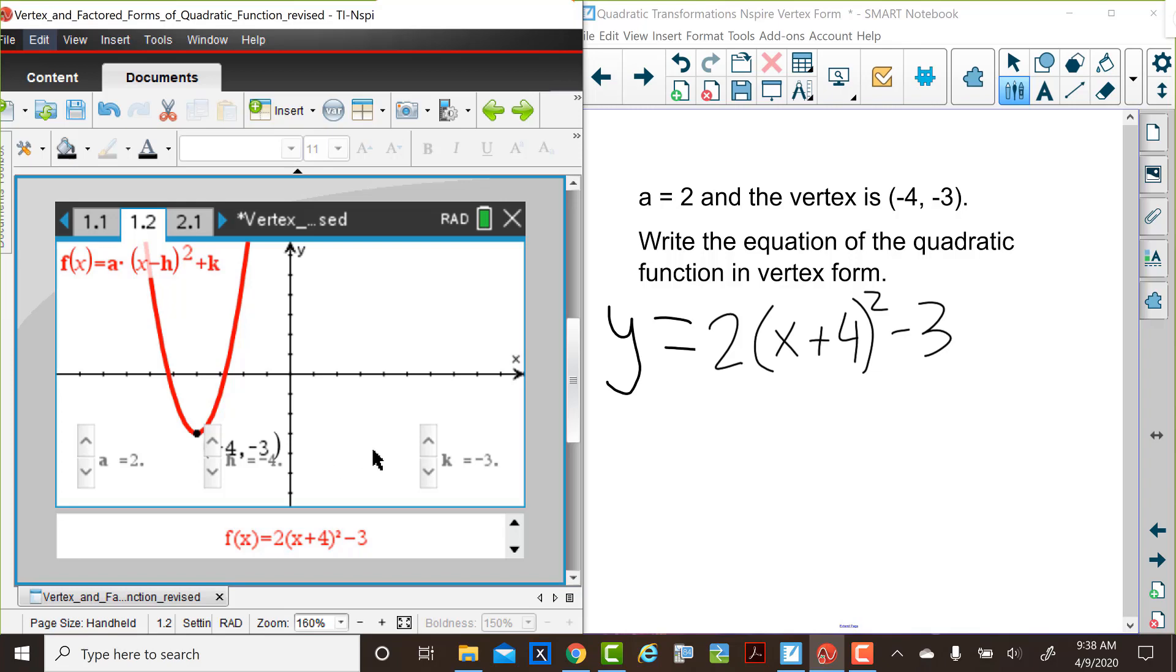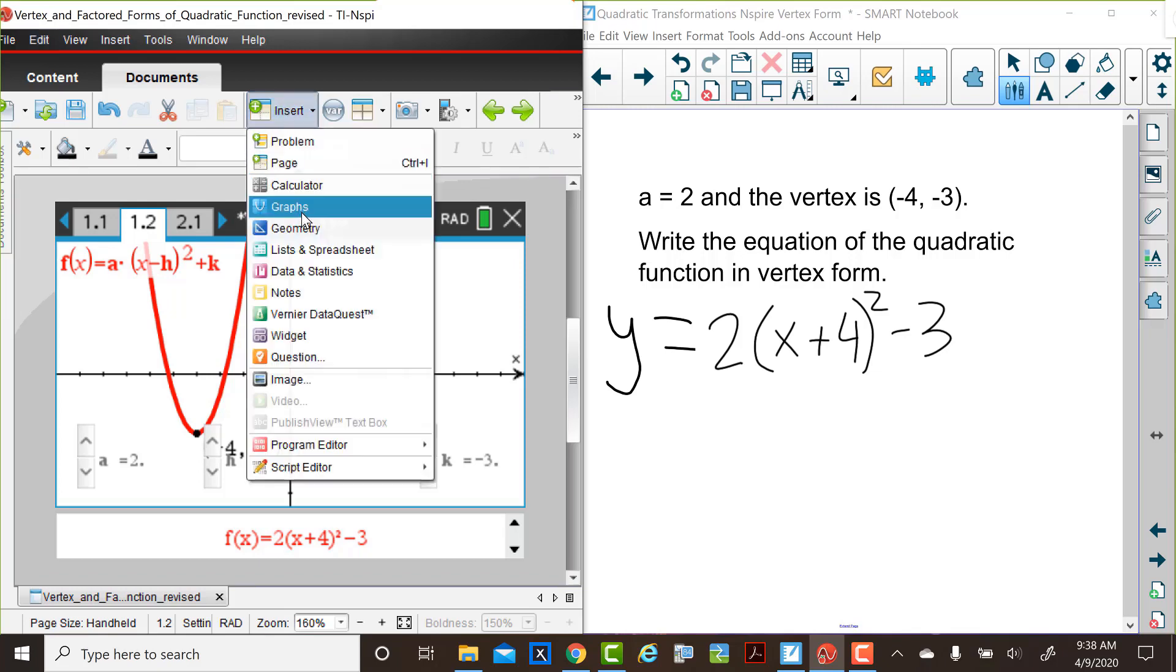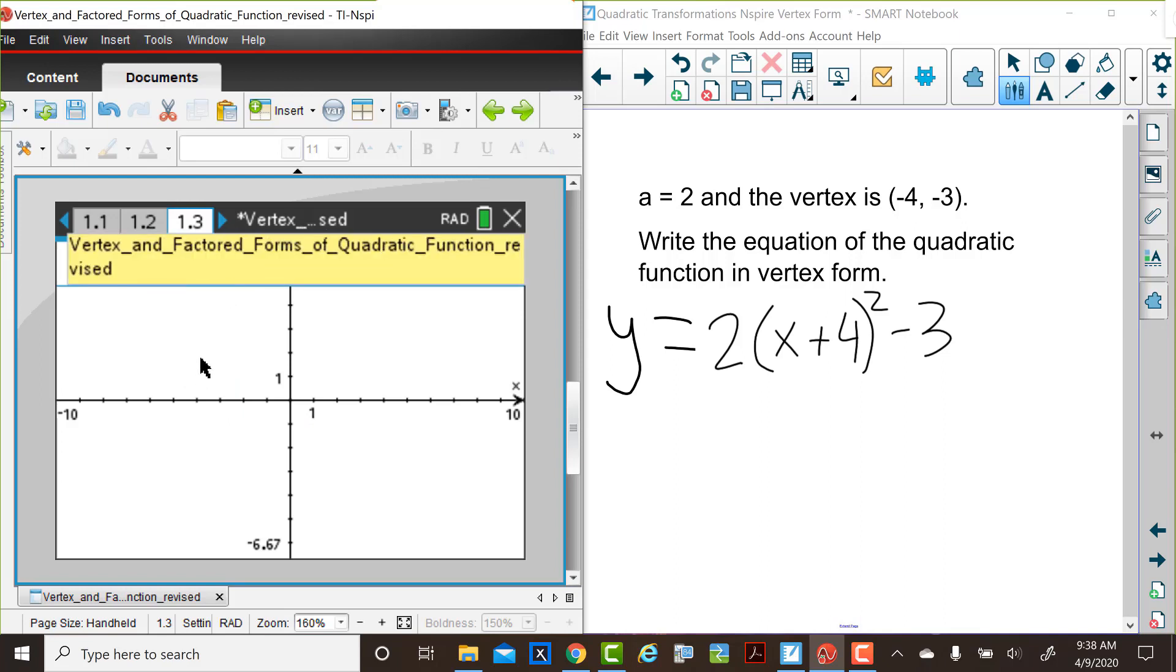When you're using a TI-Inspire handheld or the software, you could actually open a new document or insert a page in the current document in which you're working. And if we insert a Graphs page here, on the handheld, you could press Control Document to insert a page and choose Graphs. We're going to graph the parent function f(x) equals x squared. If you think about this equation, we could also think of it as f(x) is equal to 1 multiplied by (x minus 0) squared plus 0, the parent function.